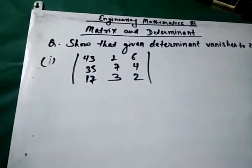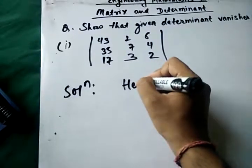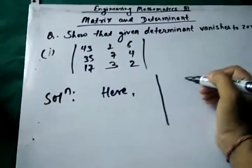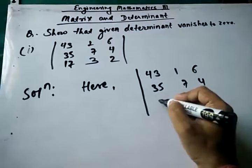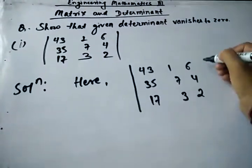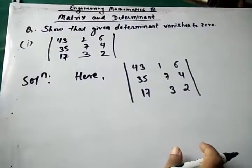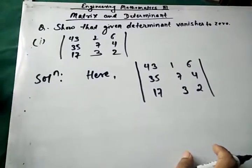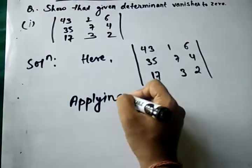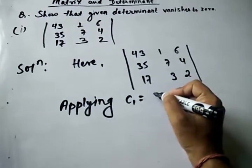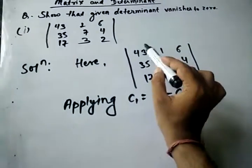Let us proceed to our solution. The given determinant is: 43, 1, 6 / 35, 7, 4 / 17, 3, 2. Here we will apply an operation on column 1.